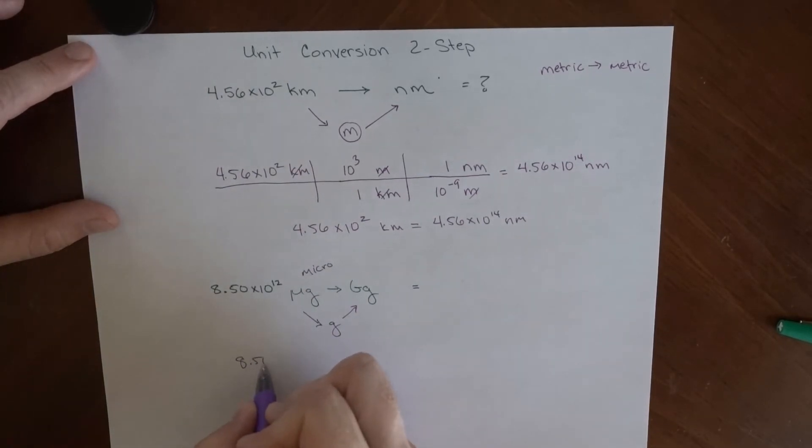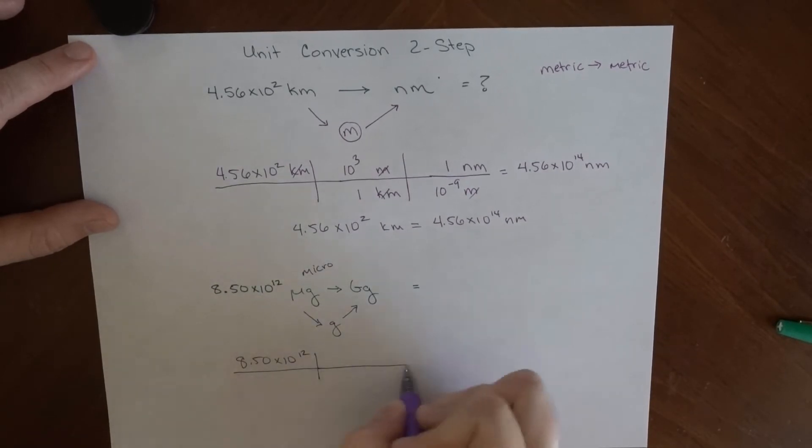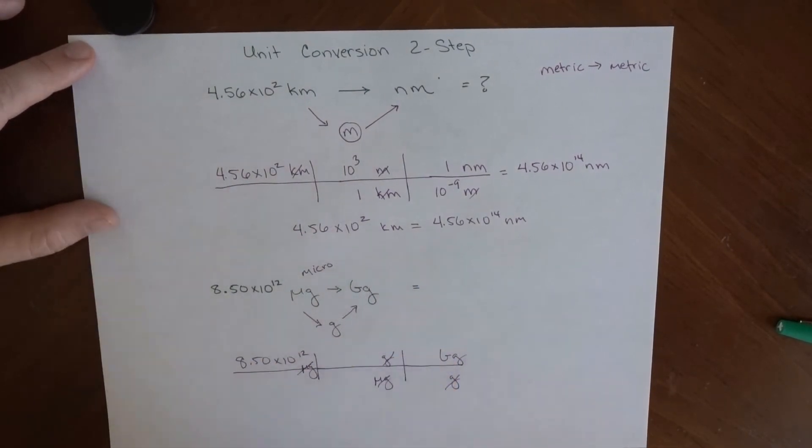So 8.50 times 10 to the 12th, and that is micrograms. And I want to get rid of units of micrograms, get units of grams, and then go from units of grams to units of gigagrams. So my grams cancel, and my micrograms cancel. So it works out pretty well.